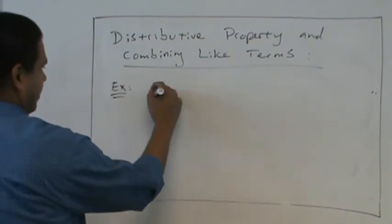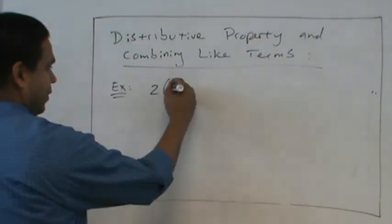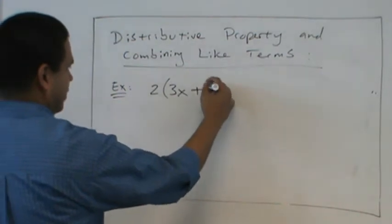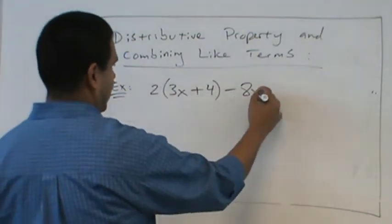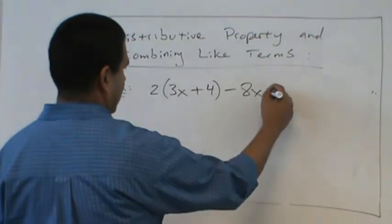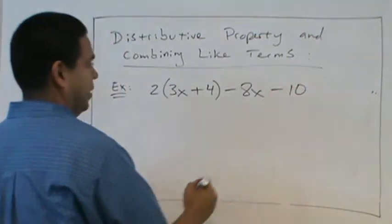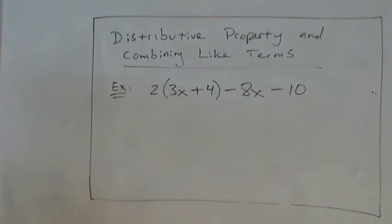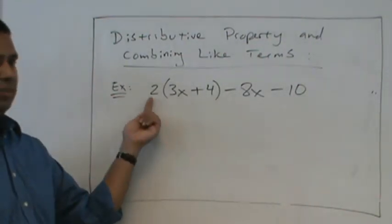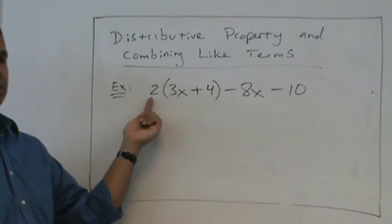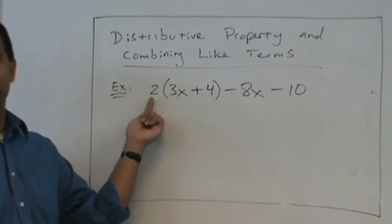So let's say we have 2 times 3x plus 4 minus 8x minus 10. What if we have that? Well, it looks complicated, but it's real easy. When we see parentheses, number out in front, we're going to multiply. It means distribute. Very good.